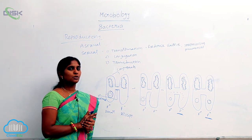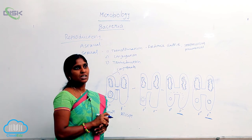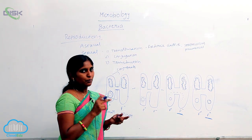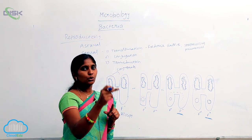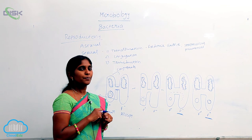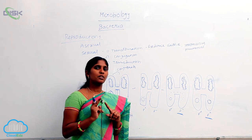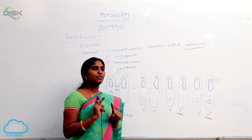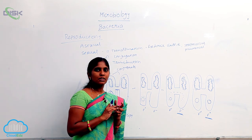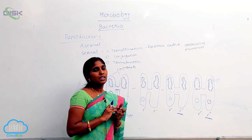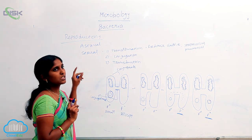Next, transduction. Transduction means genetic material — DNA — is transferred from one bacterium to another bacterium through bacteriophages. This transfer of genetic material from one bacterium to another through bacteriophages is called transduction, found by Lederberg in Salmonella typhimurium. This is about the reproduction of bacteria.